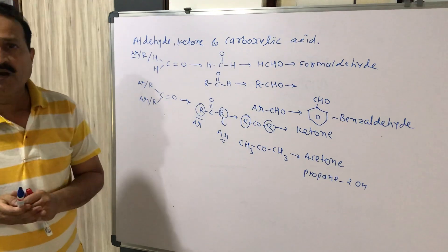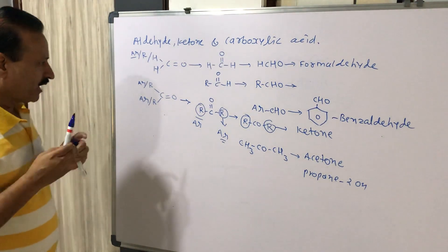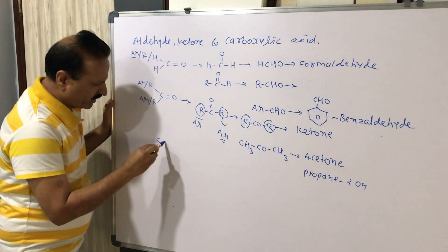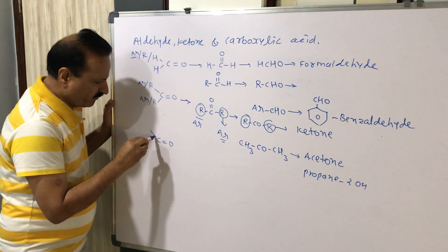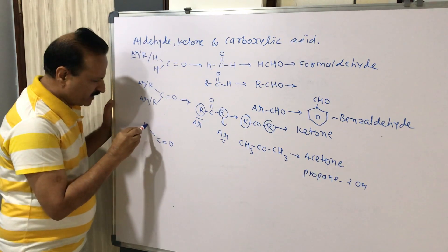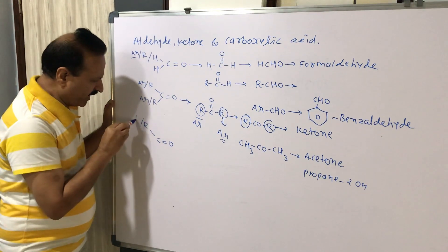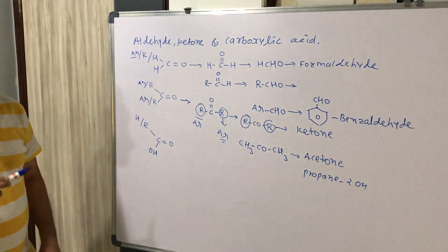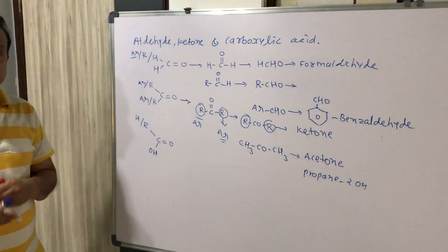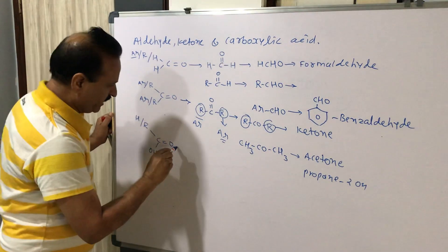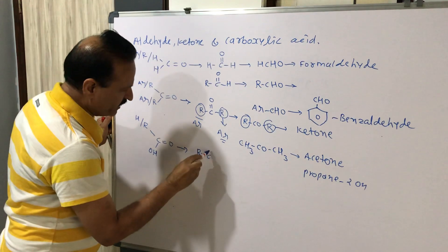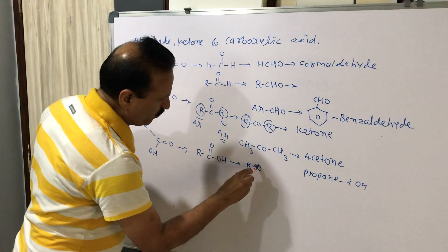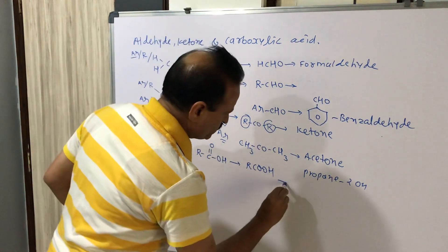Now, third — how can we form Carboxylic Acid? Again, Carbon and Oxygen have a double bond. One valence of Carbon is satisfied by R or H, and another valence of Carbon is satisfied by a Hydroxyl group (OH). The formula becomes R-C(=O)-OH, which is Carboxylic Acid.